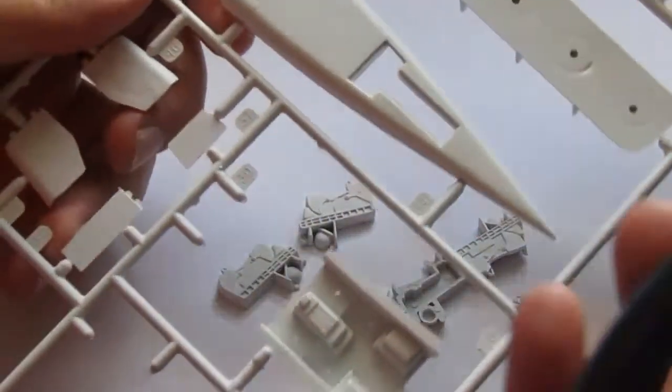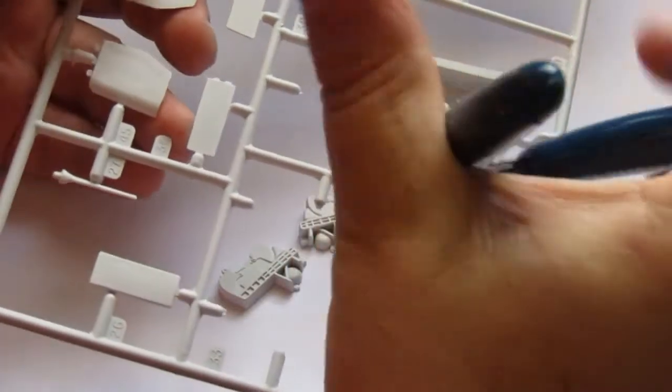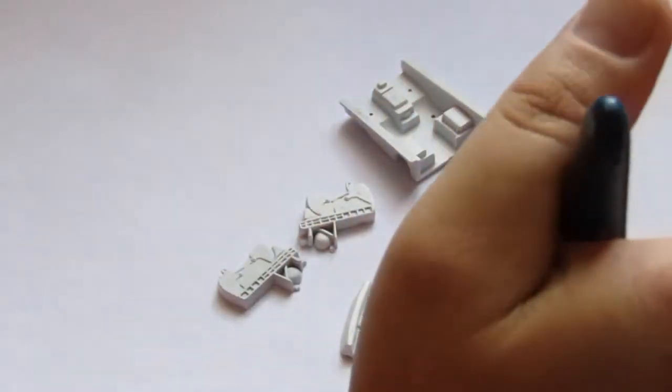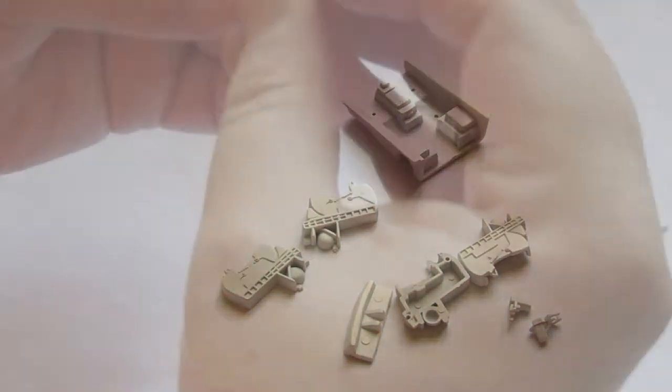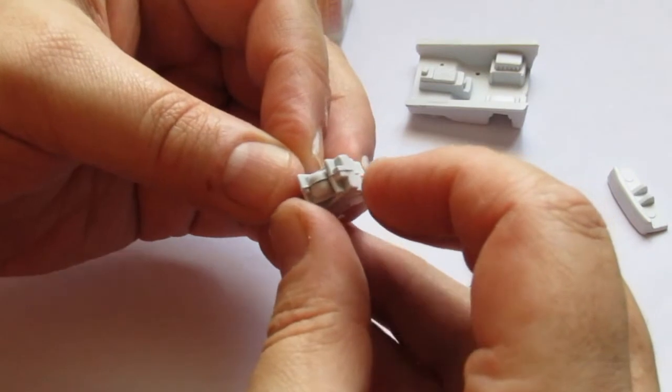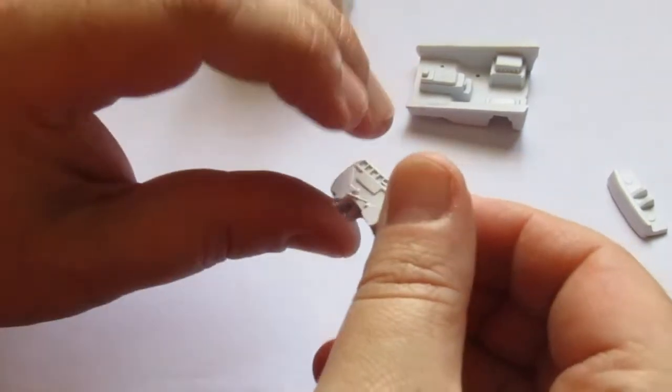Once the primer had dried, it was time to tackle the cockpit sub-assembly. I removed all the relevant parts from their sprues and cleaned them of any flash and excess plastic. They didn't fit together very well and required quite a bit of manipulation once the glue was applied. Even so, they were nicely detailed.